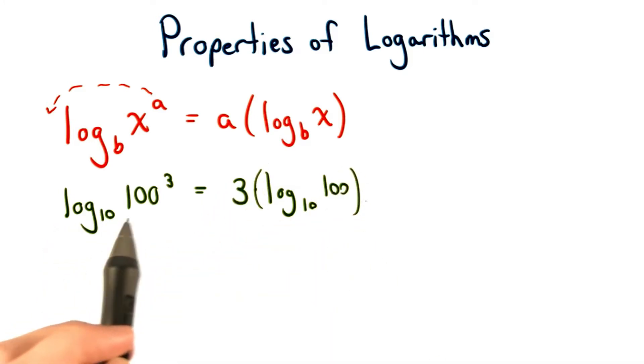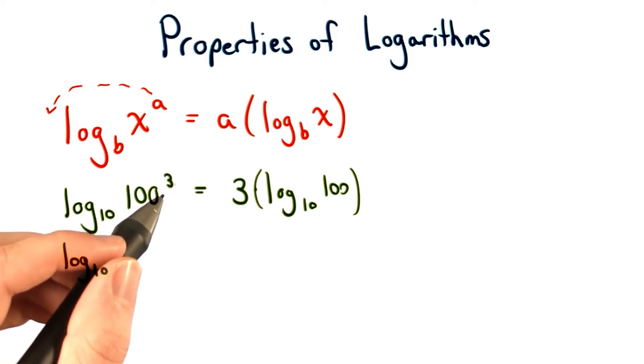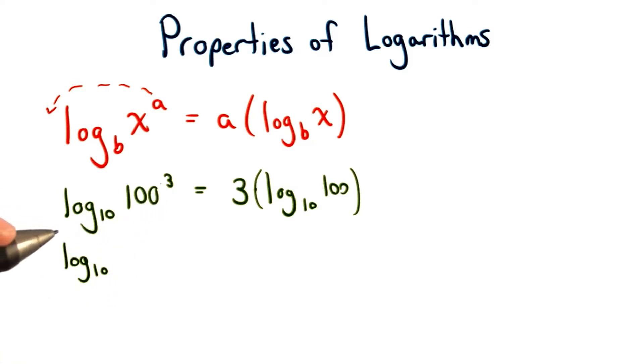Let's carry out the math on both sides of the equation to make sure that this makes sense. On the left hand side, we'll have log of base 10 and then 100 to the third power. Well, 100 to the third power is the same thing as a million. That's 1 followed by 6 zeros.